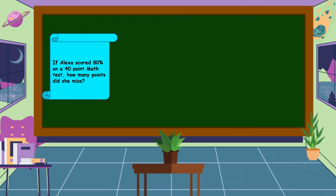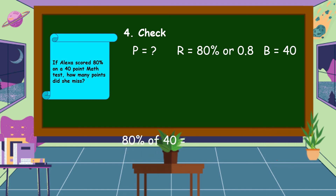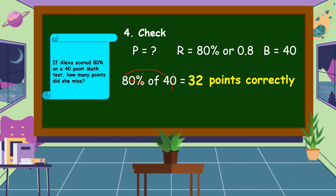The last step is to look back or check if our answer is correct. We solve for the percentage of the correct answer. The rate is equal to 80% or 8 tenths, and the base is 40. To find 80% of 40 mentally, we omit the zero in 80% and cancel the zero in 40, then multiply 8 times 4, which equals 32. Therefore, 80% of 40 is equal to 32, which is Alexa's correct score. Since she got 8 points missed, 32 plus 8 equals 40.